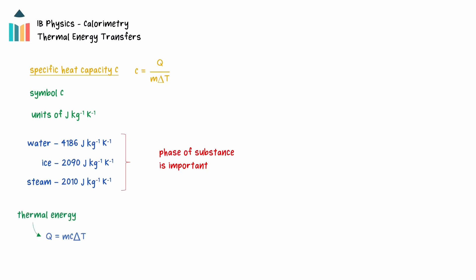q is the energy transferred, m is the mass of the object, c is the specific heat capacity, and delta T is the change in temperature in units of Kelvin or Celsius.